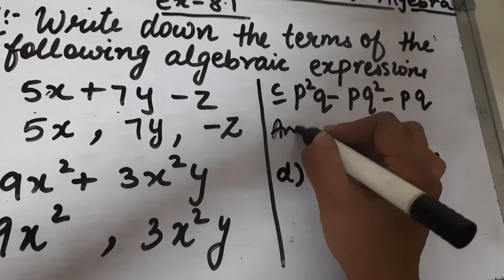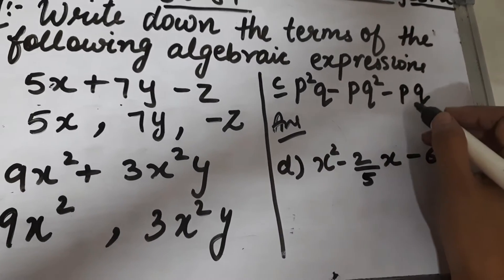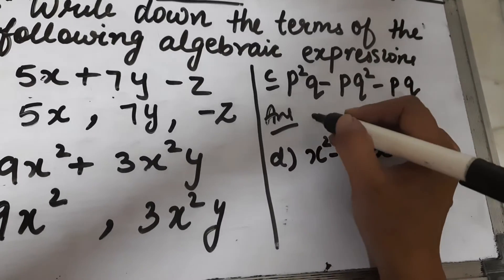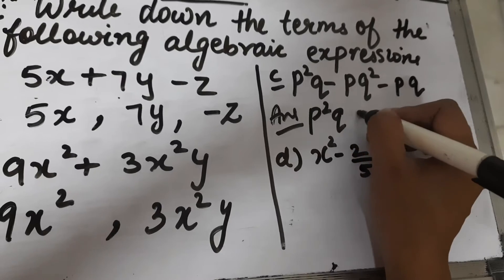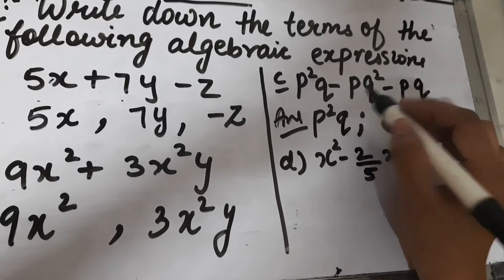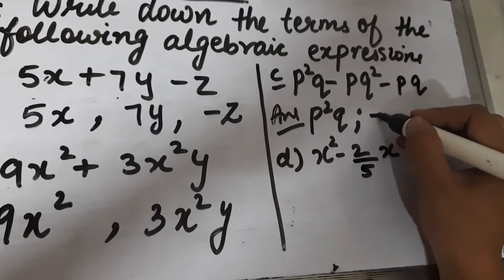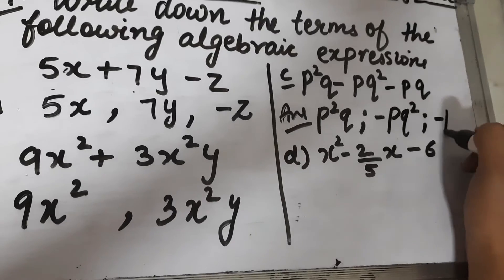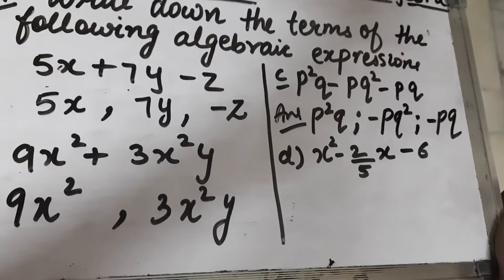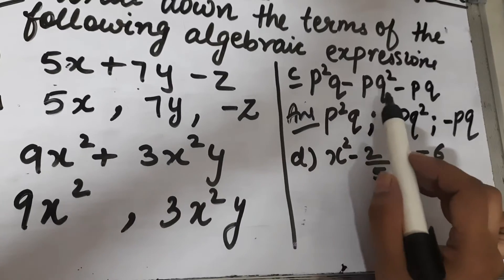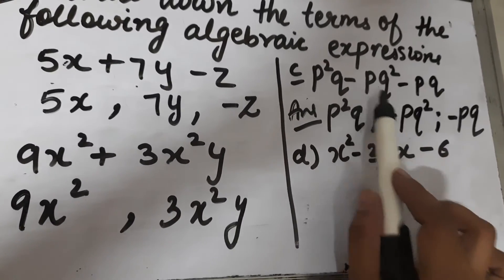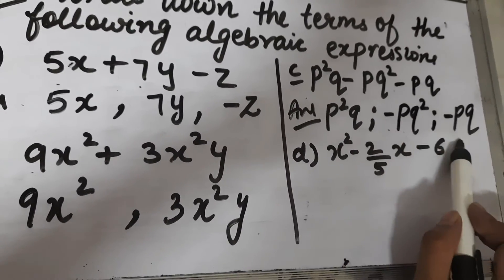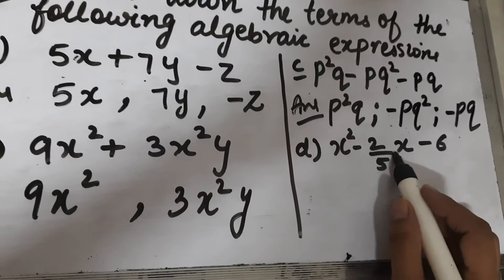Part (c) is p²q - pq² - pq. There are three terms in this expression. First term is p²q, second term is minus pq² — we always take the negative sign along with the term — and third term is minus pq.